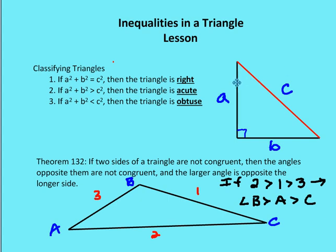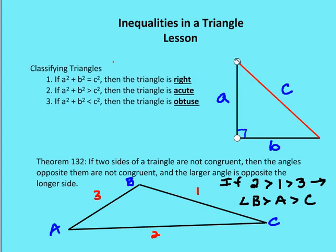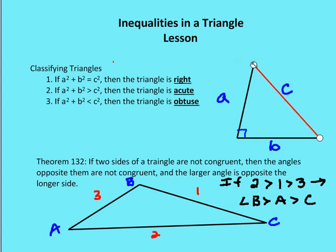If I keep a and b the same length and rotate segment a in toward b, then in order to complete that triangle I have to shrink the size of c. So now c relative to a and b becomes less than what it was, meaning a squared plus b squared becomes greater than c squared. As I rotate a in, I am shrinking c, and now you can see I have an acute triangle.